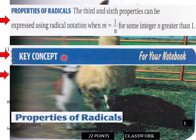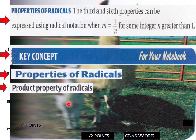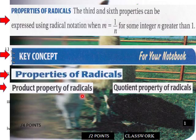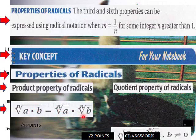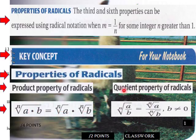Okay, so what are we talking about? Properties of Radicals: Product Property of Radicals and Quotient Property of Radicals. The product property says the nth root of a times b is the same thing as the nth root of a times the nth root of b. The quotient property says the nth root of a over b equals the nth root of a over the nth root of b.